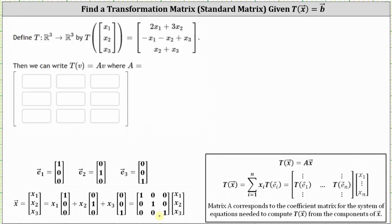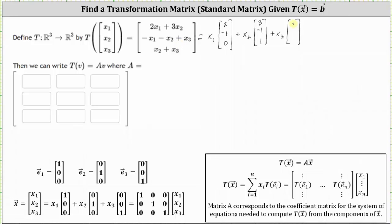Using this idea, let's write the given output vector or image as a linear combination of three vectors in R3. We can write the image as x sub one times the vector formed using the coefficients of x sub one, which are (2, negative one, zero), plus x sub two times the vector formed using the coefficients of x sub two, which are (3, negative one, one), plus x sub three times the vector formed using the coefficients of x sub three, which are (0, 1, 1).